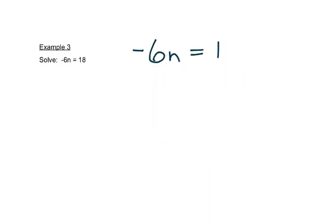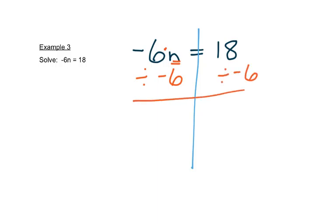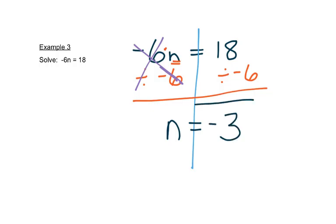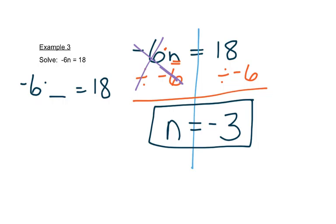Here's our next problem. We'll draw a line down through the equal sign again. Our letter n is on the left, and we need to ask ourselves what's being done with n. When a number is smashed against it, remember it means multiplication — so we have negative 6 times n. The opposite operation for multiplication is division, so we want to divide by negative 6. If we do it on the left, we have to do it on the right. Negative 6 divided by negative 6 is 1, and 1n we can just write as n. And 18 divided by negative 6 is negative 3. That should make sense: negative 6 times negative 3 equals 18. It works — it's a solution.